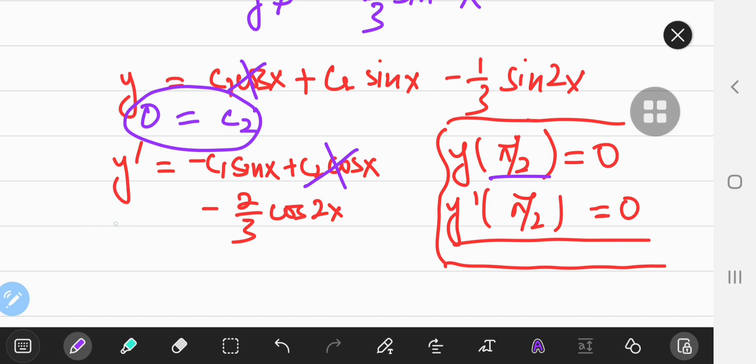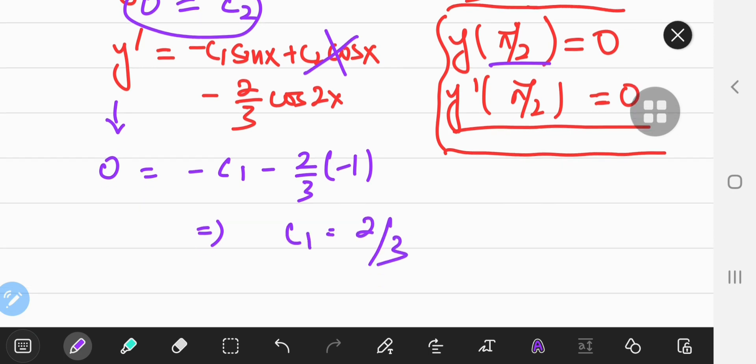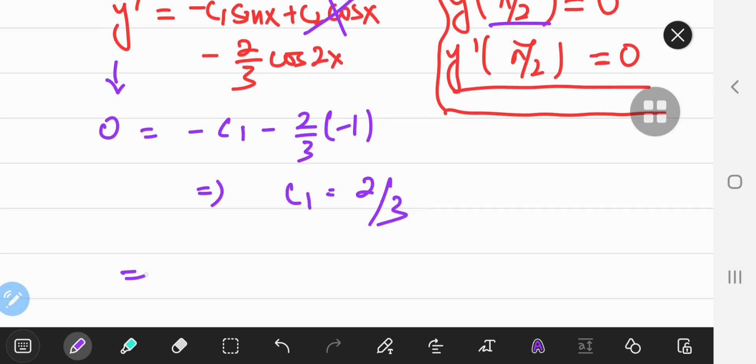Which is cool because I can now cancel it out. And y prime when x equals pi by 2 is also 0, so 0 equals negative c1 minus 2 thirds of the cosine of pi is negative 1. Hence, we have here that c1 equals 2 by 3.